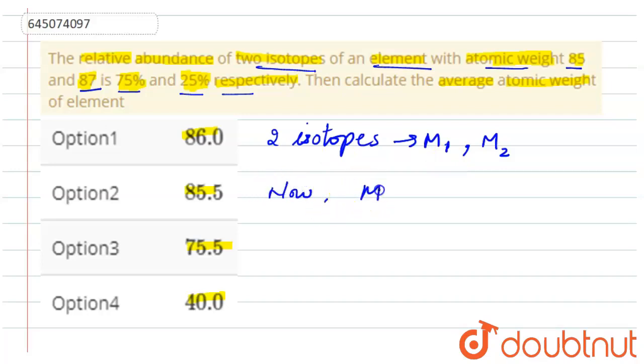Now, in the question M1 value we have given is 85 and x1 we have given is 75 percent, and M2 value we have given is 87 and x2 is 25 percent.